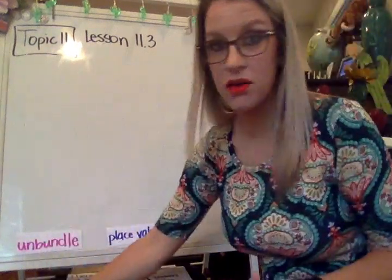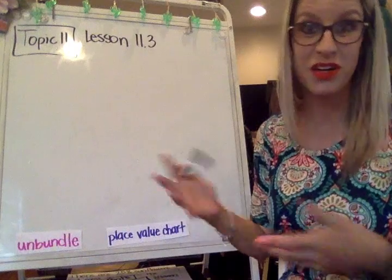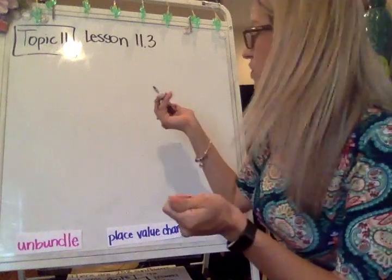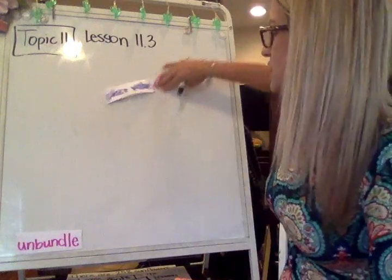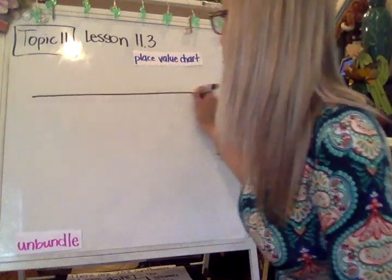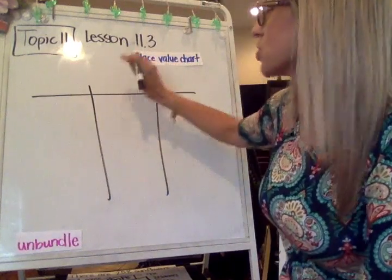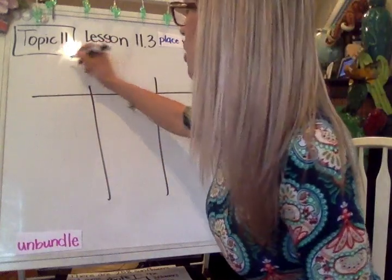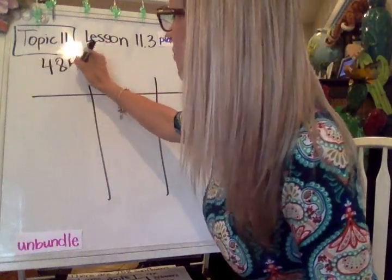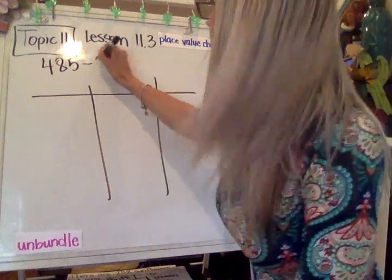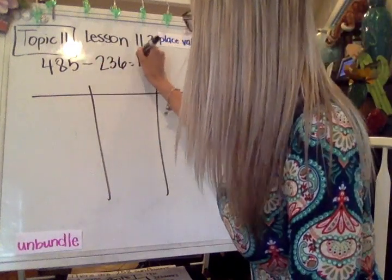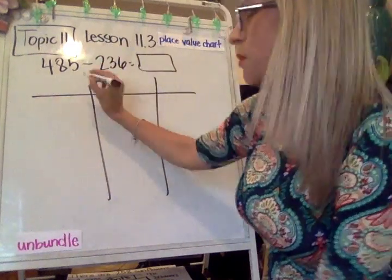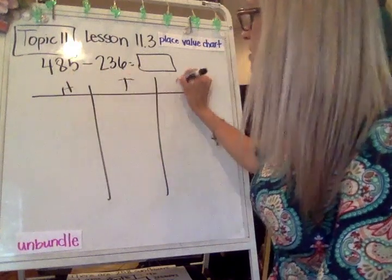In order to make a model, which just means like make a picture, we're going to have to have an equation and we're going to be using the place value chart. So I'm going to go ahead and put my place value chart and then I'm going to write the equation. The first one we're going to start with is 485 minus 236. So remember we've got our hundreds, the tens, and the ones place.